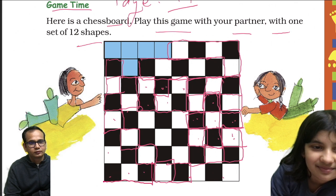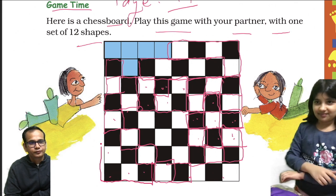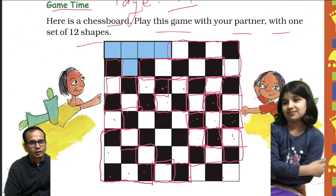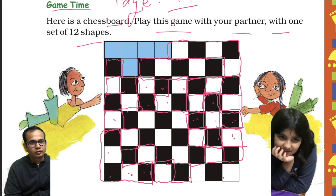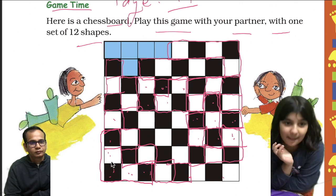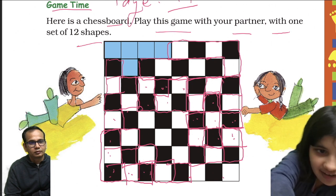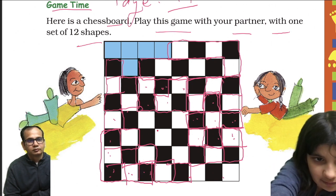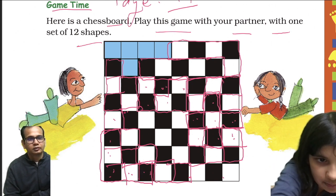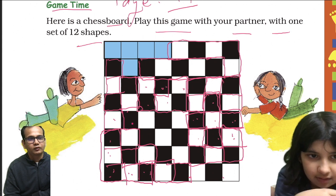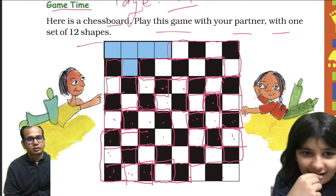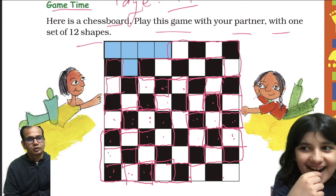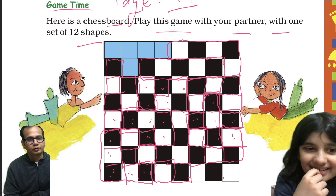I'll use this one. Now counting: 1, 2, 3, 4, 5. Then: 1, 2, 3, 4 — like this? Yeah. And then: 1, 2, 3, 4, 5. Yeah.